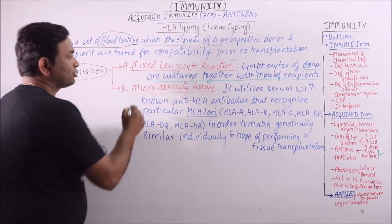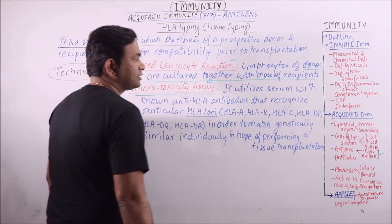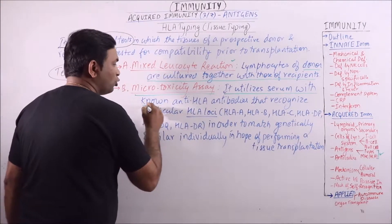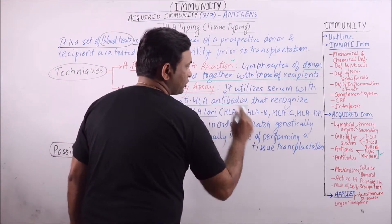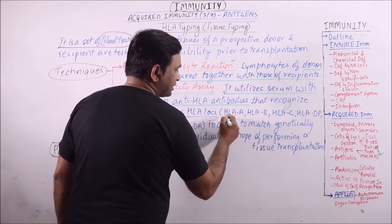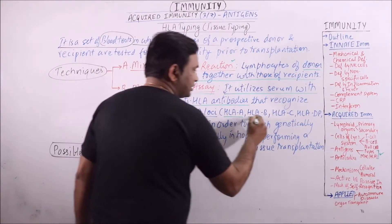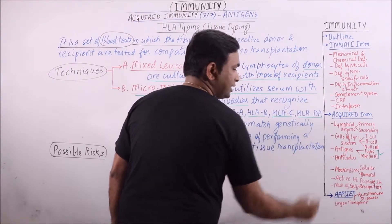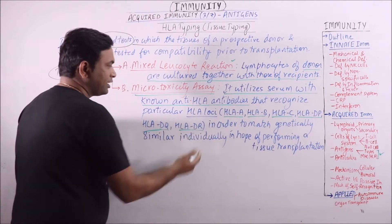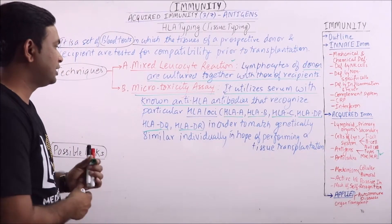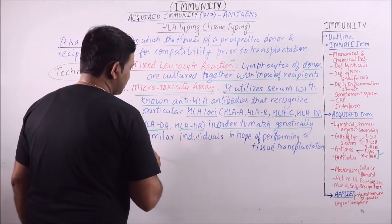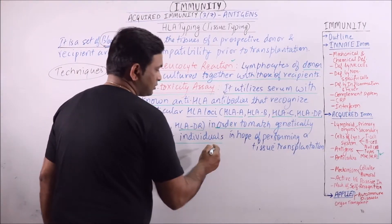Next is microtoxicity assay. In this technique, it utilizes the serum with known anti-HLA antibodies that recognize the particular HLA loci — for example, HLA-A, HLA-B, HLA-C, HLA-DP, DQ, and DR — that we have discussed in the HLA video.